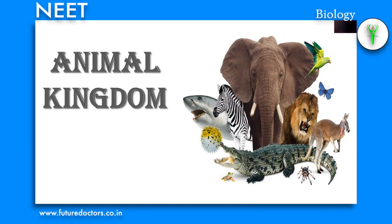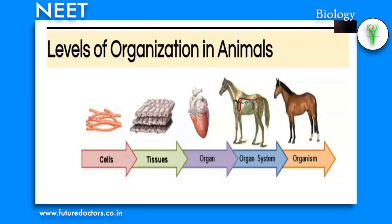In the animal kingdom, when you look around you will observe different animals with different structures and forms. As over a million species of animals have been described till now, the need for classification becomes all the more important. Classification also helps in assigning systematic position to newly described species.